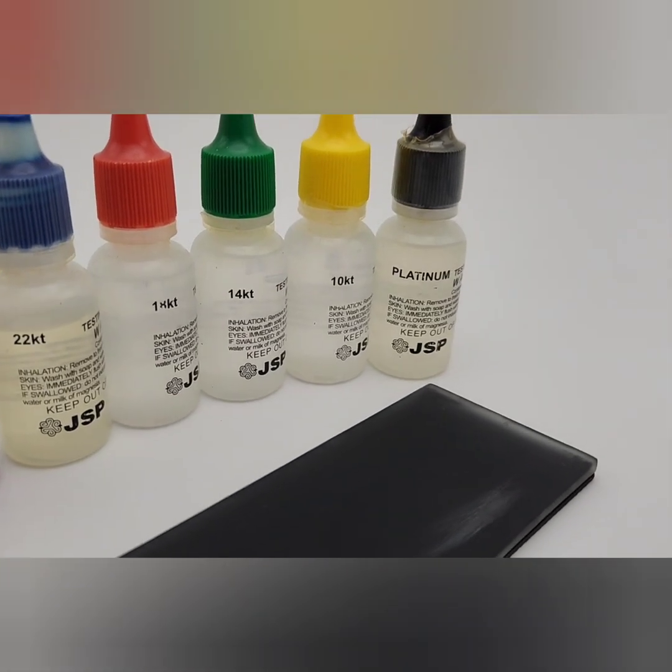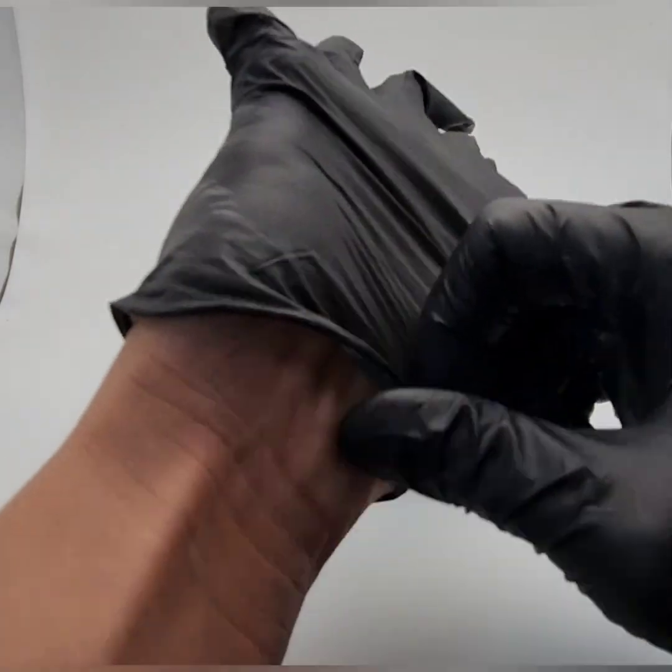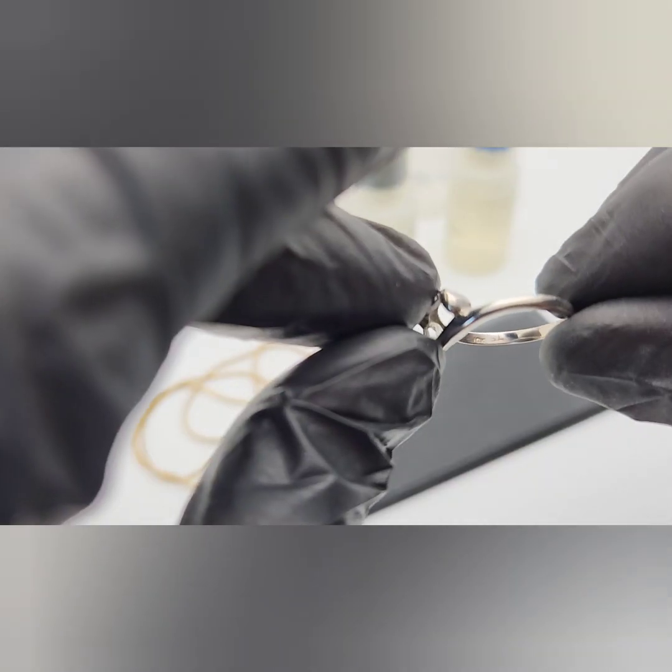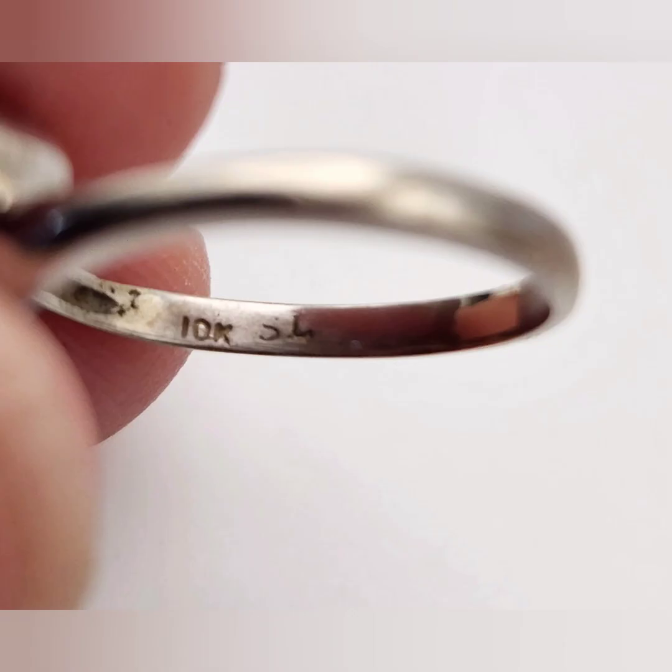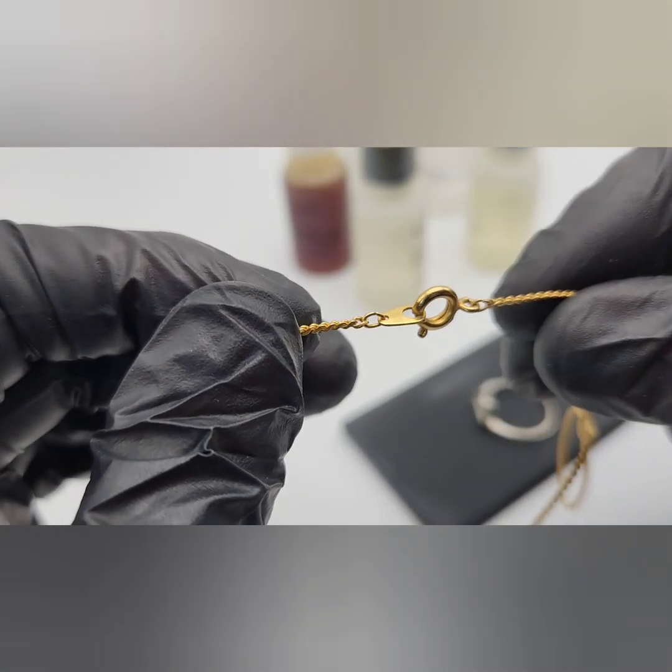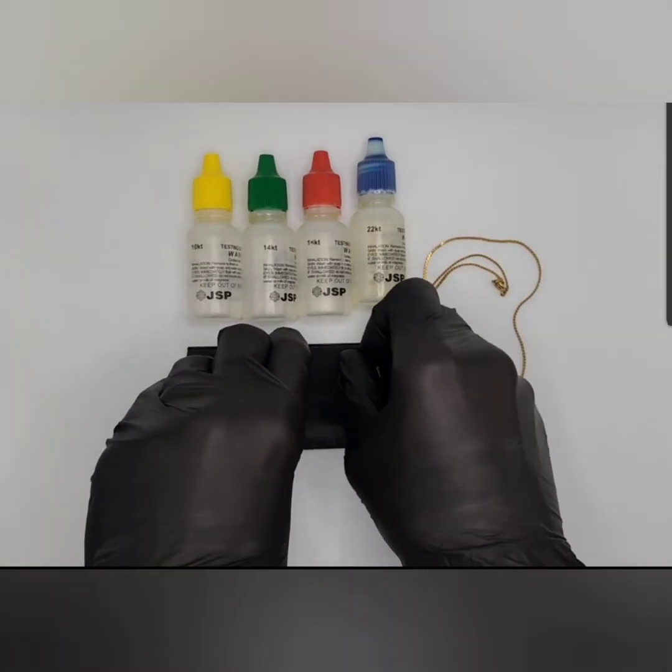Welcome, and today I'm going to show you how to use a gold acid test kit from Amazon. We are working with chemicals, please glove up. First, check for any hallmarks on your jewelry. This will help us determine which bottle to use.